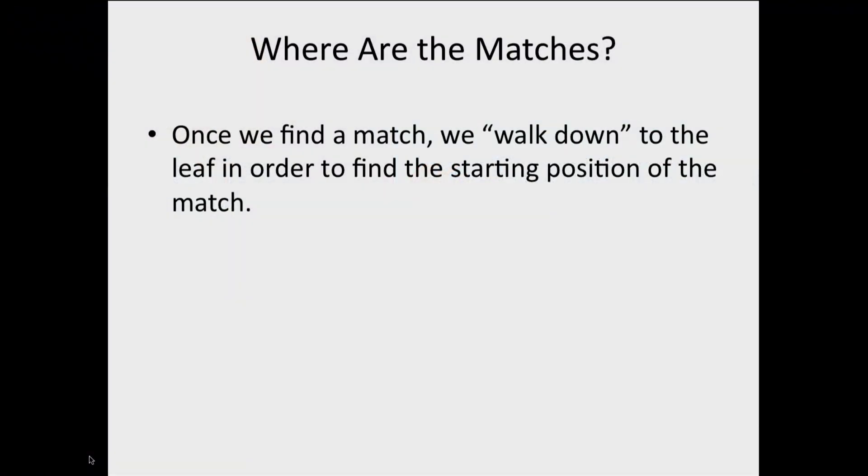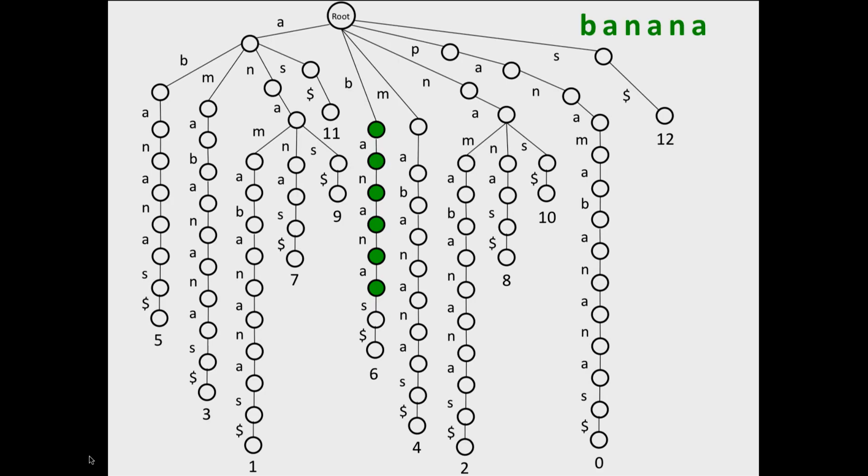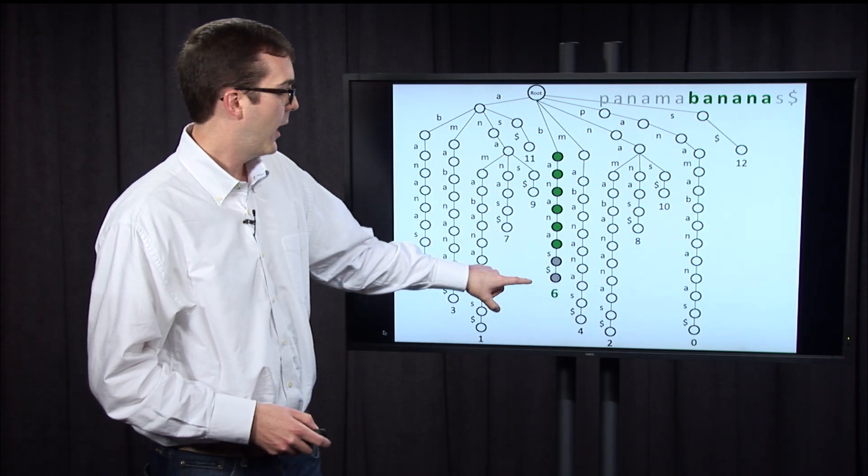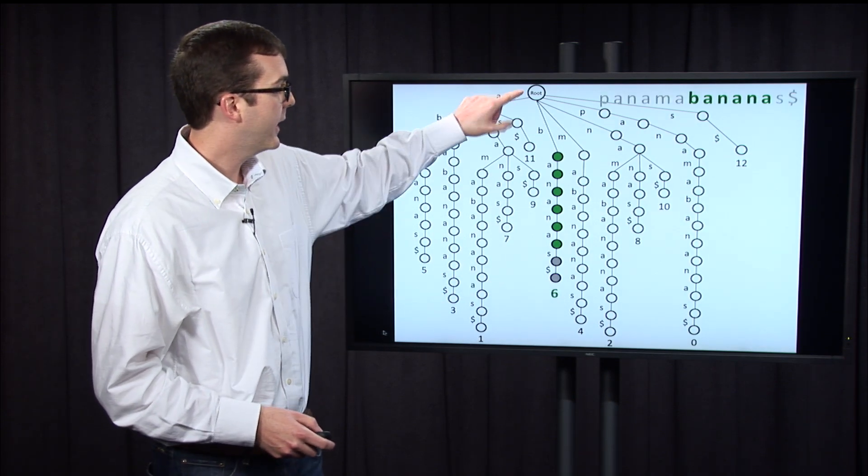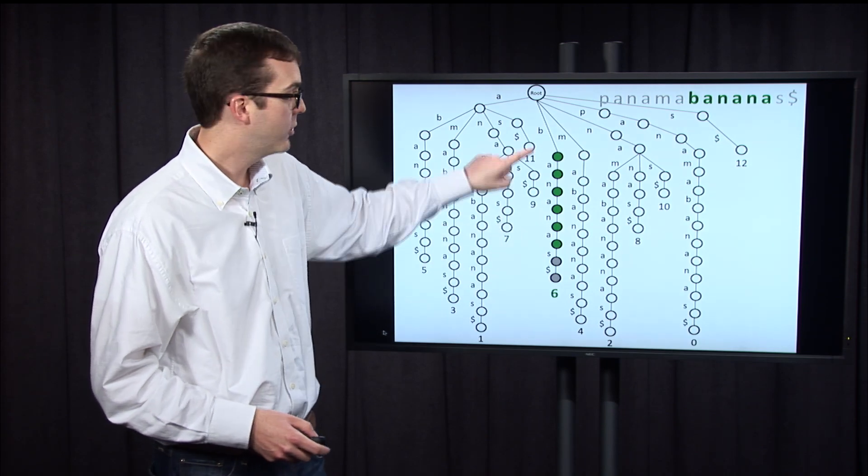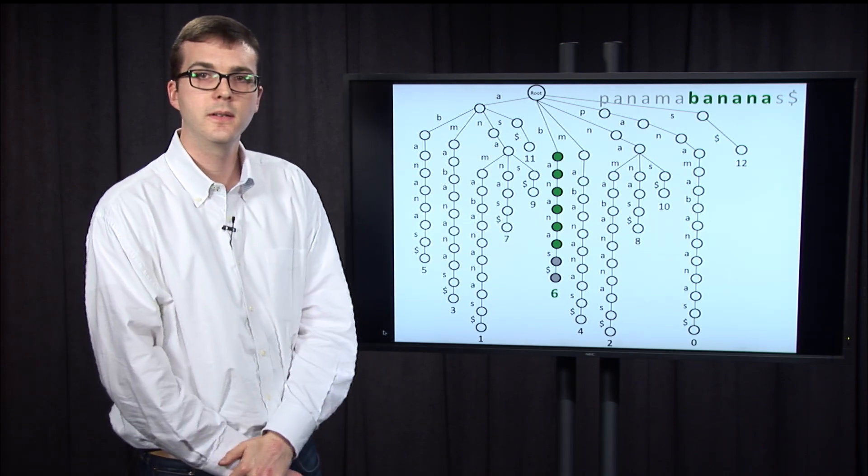Well, once we've found a match, we're simply going to walk down to the leaf to find out what the position of that match was. For example, if we come back to banana, we found that banana is a match. And so we simply walk down the remaining two nodes to the leaf, and see that that is at starting position 6. The suffix starting with banana was at starting position 6. So banana must be at starting position 6.